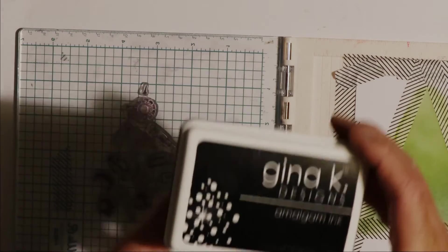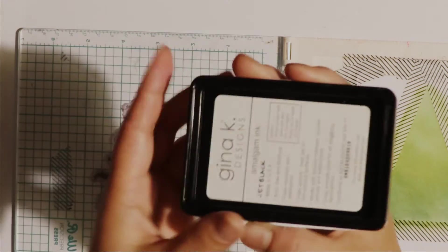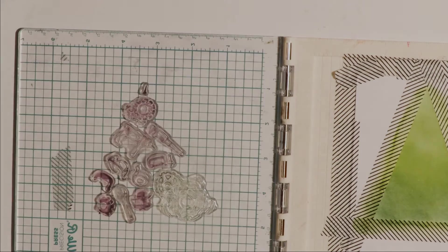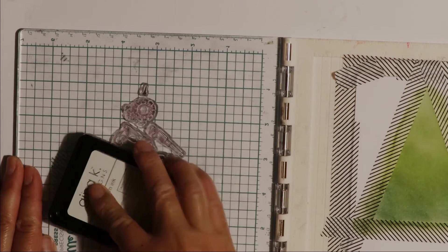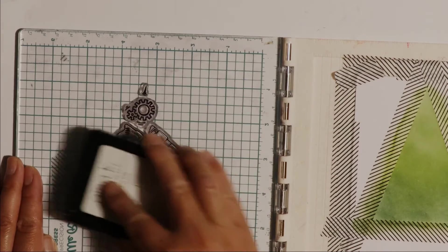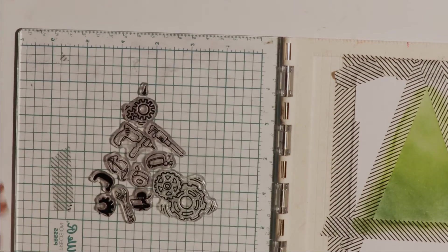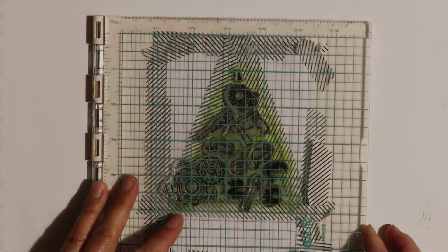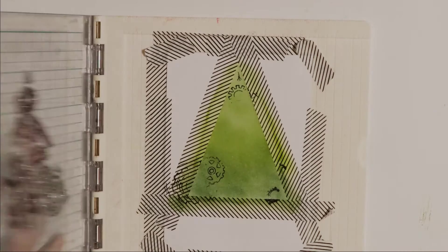Now I'm going to use my Gena Kay Designs Amalgam Ink in Jet Black to ink the stamps up and stamp down the images onto my card front. I'm pressing it down and once again I rub it.